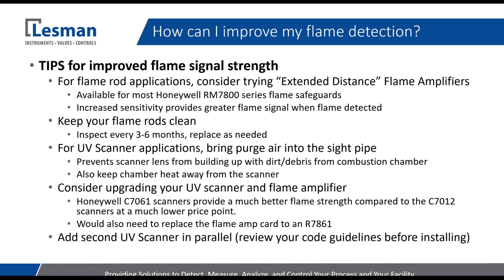The other thing you can do is periodic inspection of flame rods and keeping them clean. If you've got flame rods that could be fouling and building up soot, it may be good to inspect them every three to six months. Every application is different — if it's a dirtier application and your flame rod is more suspect to fouling, you may want to inspect more frequently. As they age, if the fouling isn't coming off or you start to see a decrease in your flame signal, you may just want to replace them. A good rule of thumb: every three to six months keep them clean, and then annually replace them.